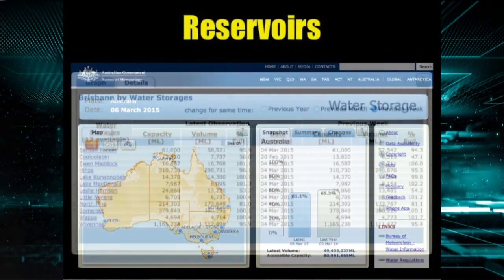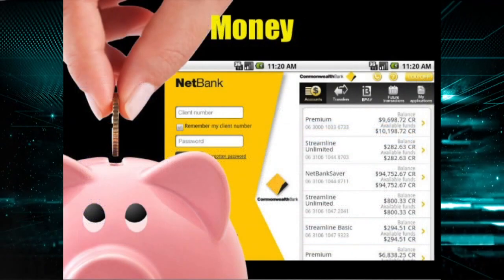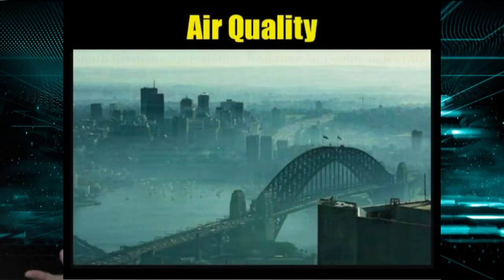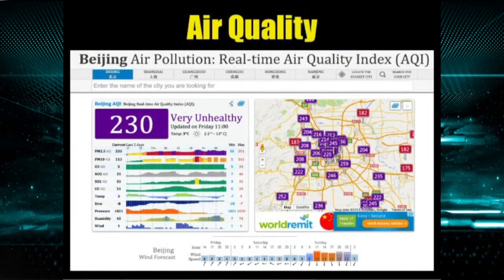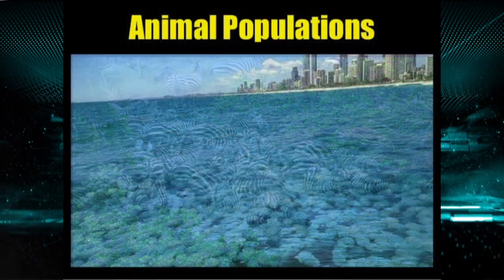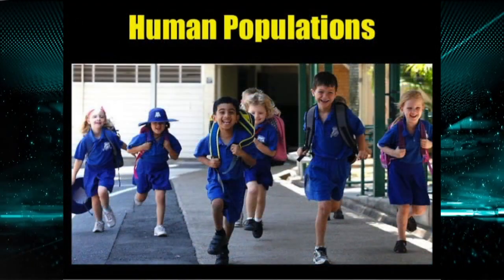In a system model, stocks can be things such as water in reservoirs or a bathtub. It could be money, air quality, animal populations or human populations.